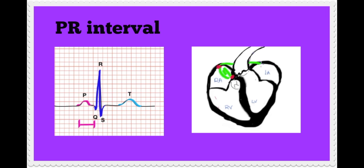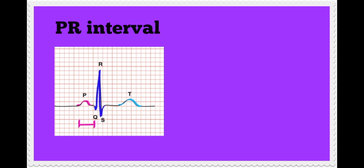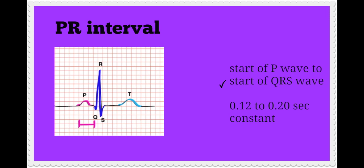This represents the entire time it takes for the SA node to fire, get to the AV node, and for the AV node to release the energy to the ventricles. There is a delay on purpose by the AV node and that is to allow for the atria to completely empty its contents. When measuring the PR interval, you should see that it is between 0.12 to 0.20 seconds.